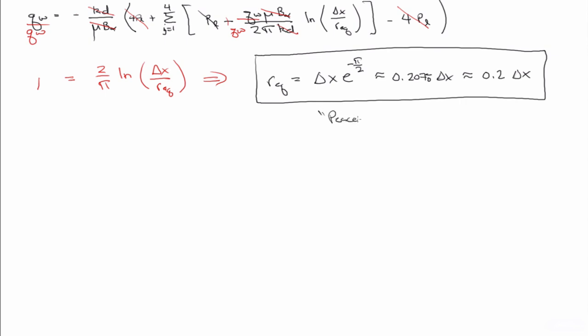So now we've solved for r_eq, and this result is called the Peaceman correction, because Peaceman was the first to derive it. There are certain assumptions built in: steady state, homogeneous, isotropic, delta x equals delta y, and the specific discretization used. Several of those restrictions can be removed to create more complicated models, but what's most commonly used is just the Peaceman correction: r_eq approximately equals 0.2 times delta x.